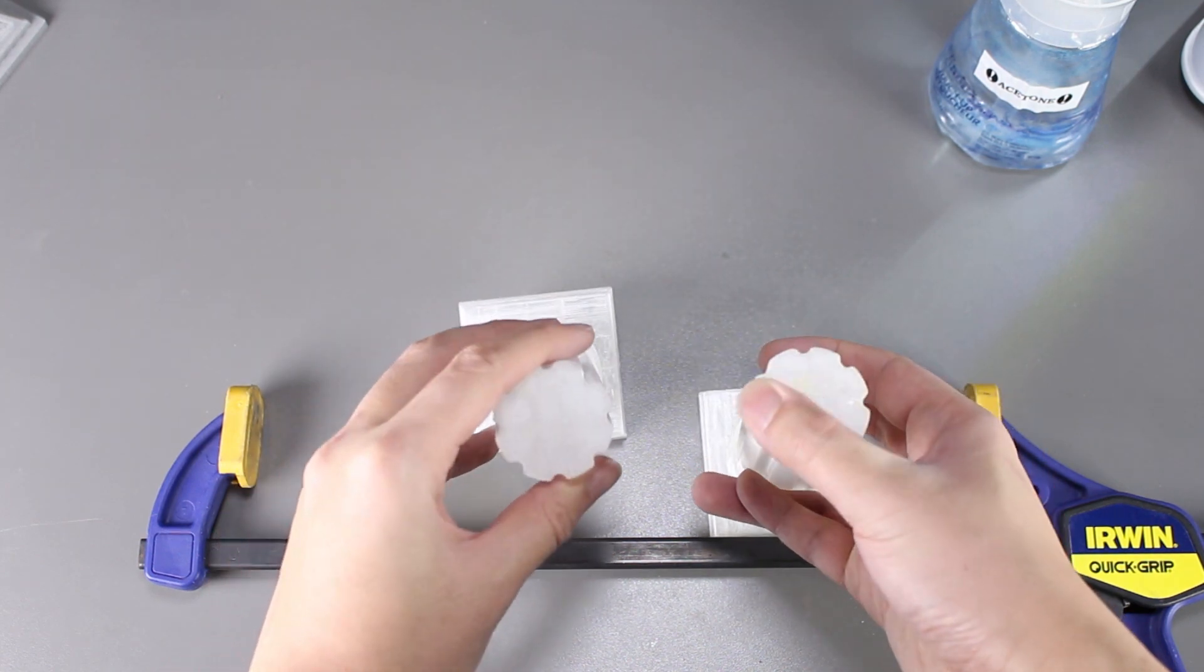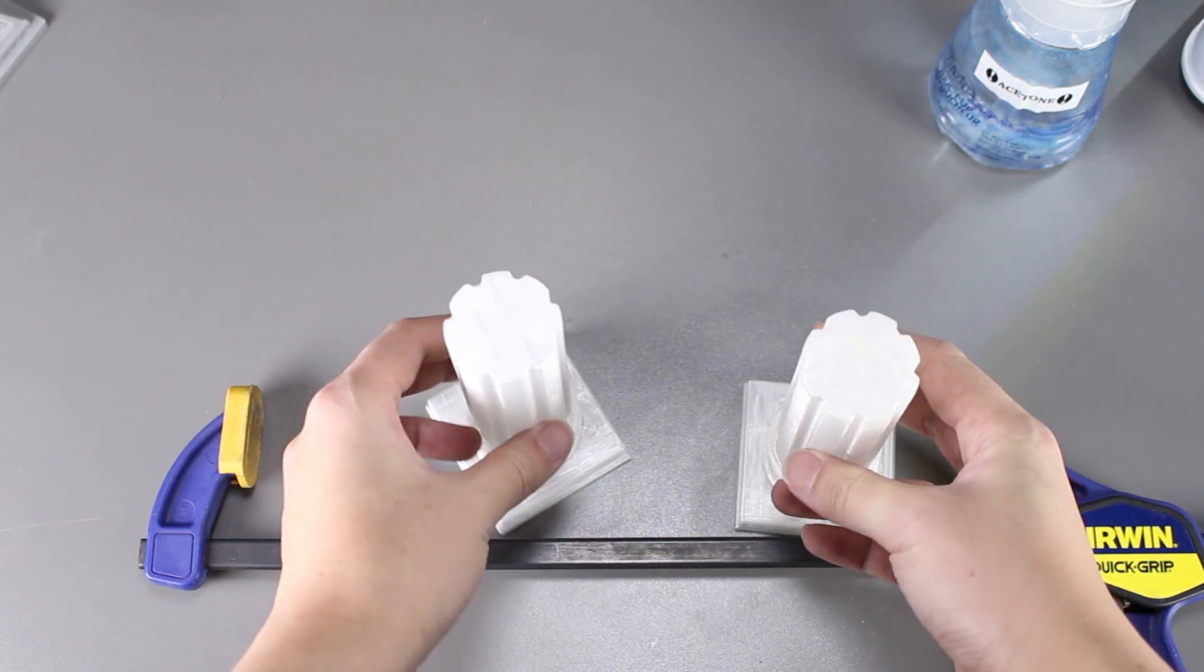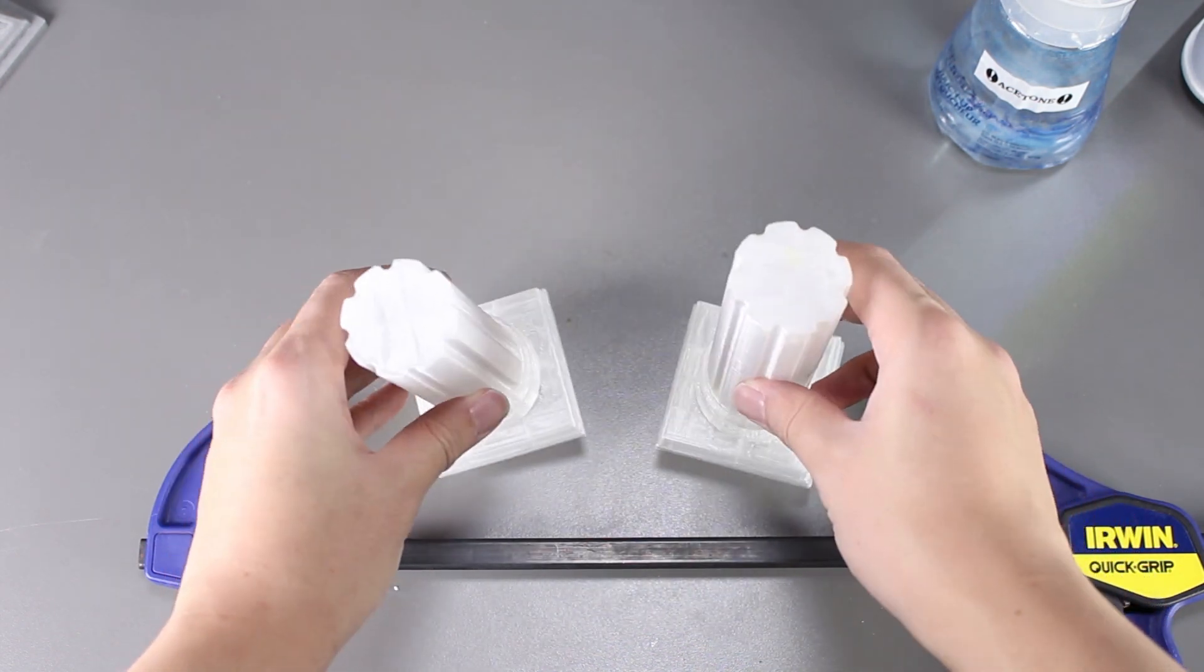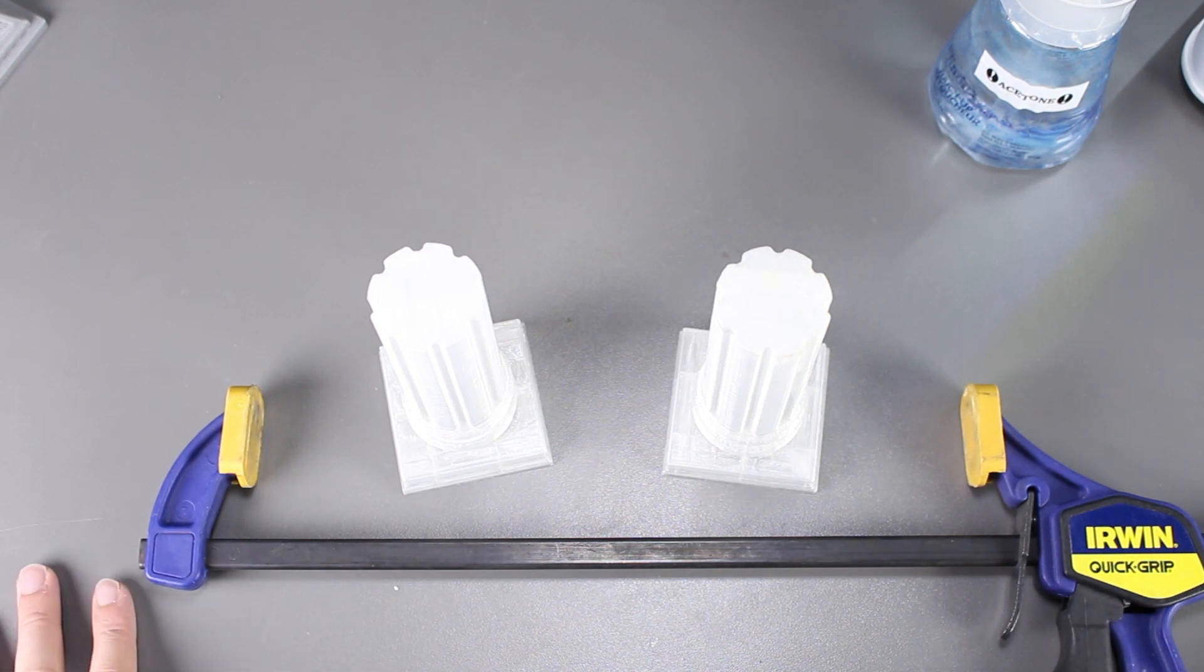For the PLA that does work with acetone, it's because their formula had other materials added into the PLA during the manufacture process, which is why it could glue together and be smooth.